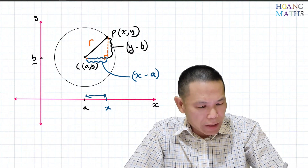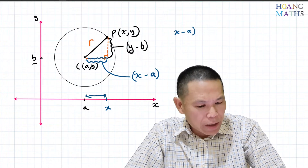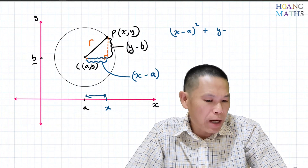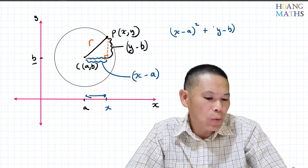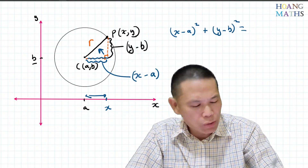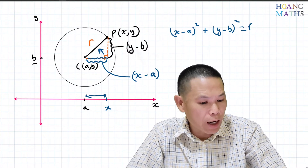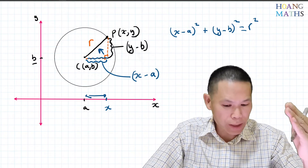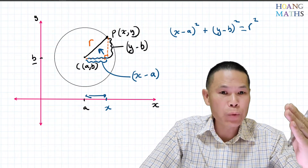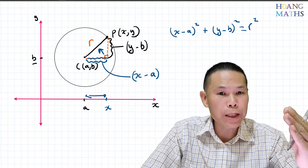Now from Pythagoras' theorem, we know that (x minus a) squared plus (y minus b) squared is equal to the hypotenuse squared, which is r squared. So this is the general equation for a circle with center (a, b) and radius r.